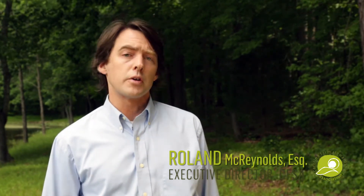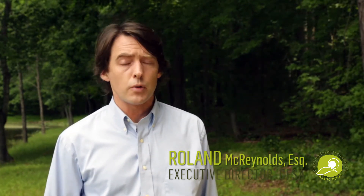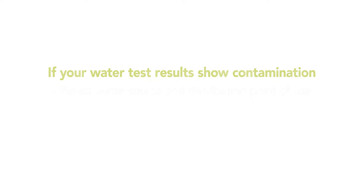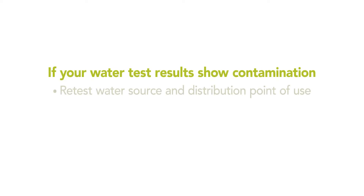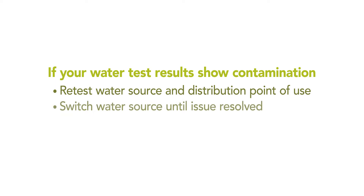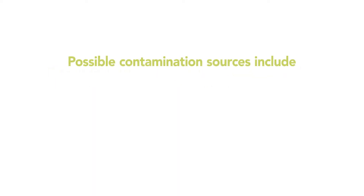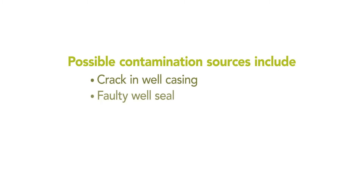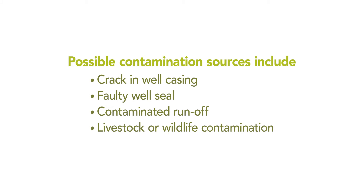So what happens if your water test results show contamination? Immediately retest the water source and distribution point of use, and switch your water source until you can identify the contamination source and resolve the issue. Possible sources of contamination could include a crack in your well casing, a faulty well seal, contaminated runoff, or livestock or wildlife contamination.